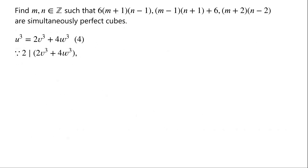Because 2 divides 2v cubed plus 4w cubed, so 2 divides u cubed. That is to say, u cubed is even. So u must be even.